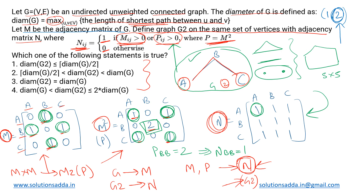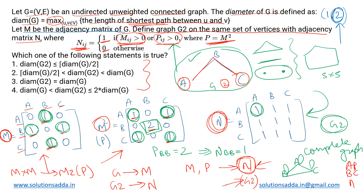It turns out that the resulting adjacency matrix N is all ones. This is the adjacency matrix corresponding to graph G2. Looking at this, every node is connected to every other node — we can call such a graph a complete graph. If we construct graph G2, it would have vertices A, B, C all connected to each other, and also self-loops since A to A, B to B, and C to C are also connected. For this graph, the diameter is one since any two vertices have a direct path of length one between them.